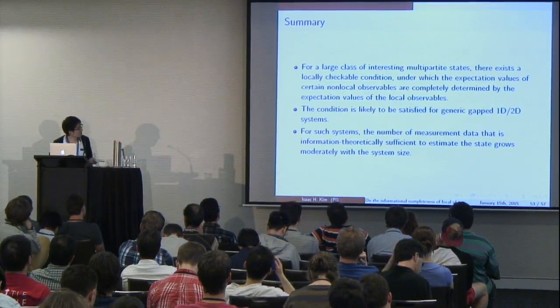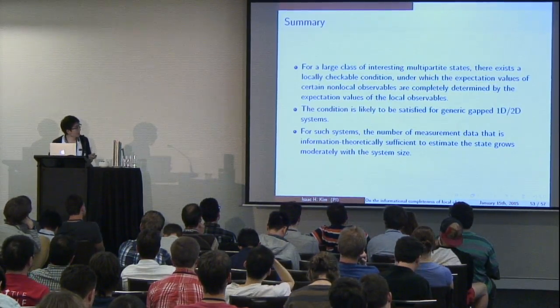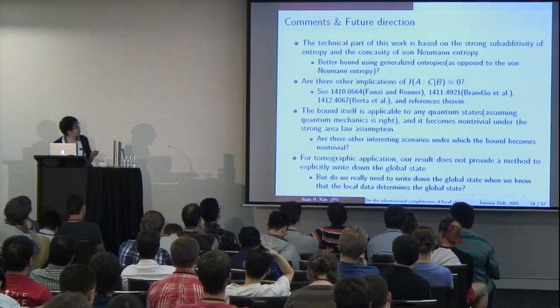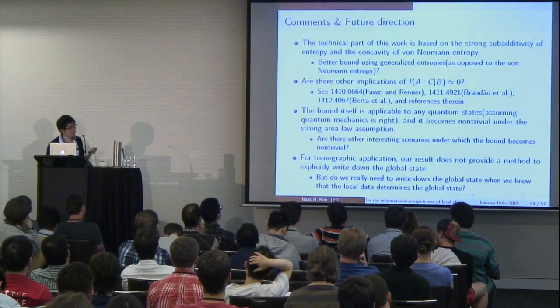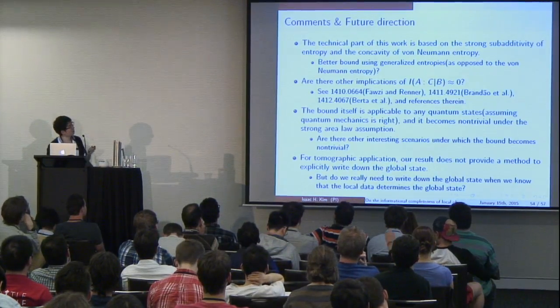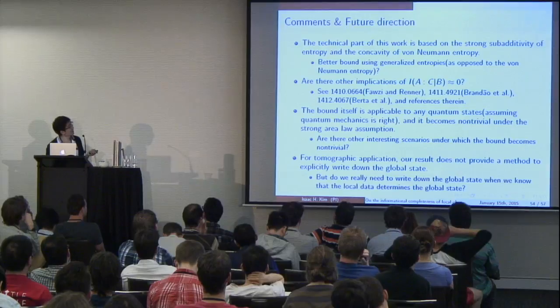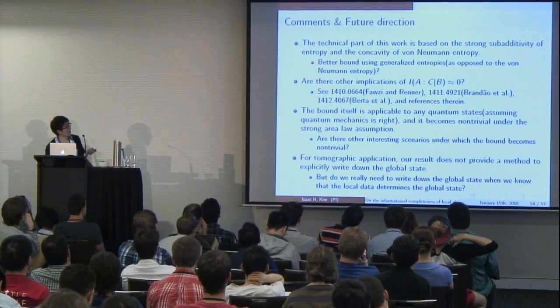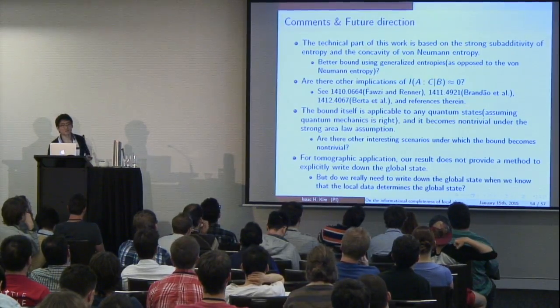So the bottom line is: for a large class of interesting multipartite states, there exists a locally checkable condition under which the expectation values of local observables can actually imply the equivalence of non-local observables, and this condition is likely to be satisfied for interesting systems in 1D and 2D. All of this can be found in the paper, along with some comments and future directions. Thank you.